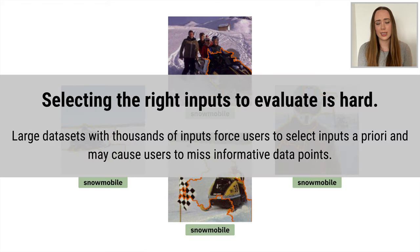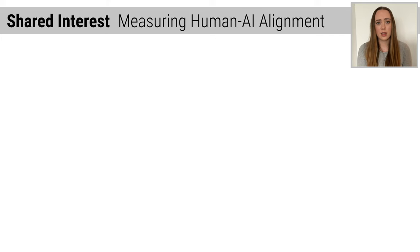So the takeaway here is that selecting the right inputs to evaluate is hard. We have large datasets, so we can't evaluate everything. And depending on how we subsample, we could miss the most informative data points. This was the problem that led us to develop Shared Interest, a method to explore model behavior at scale.